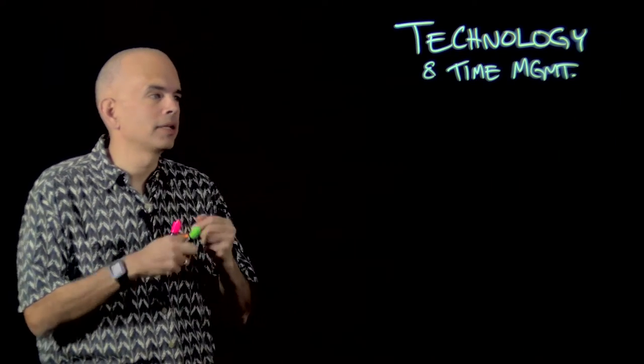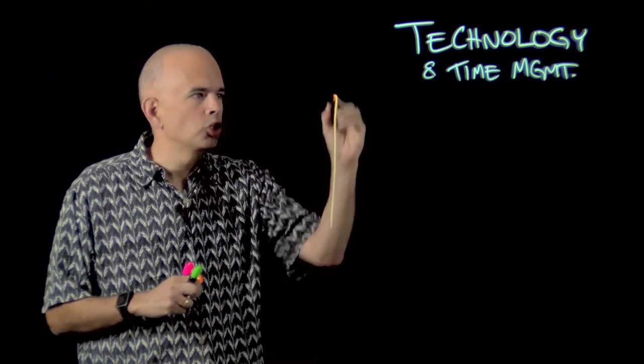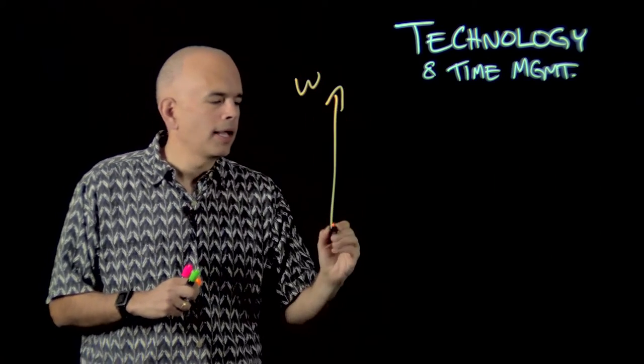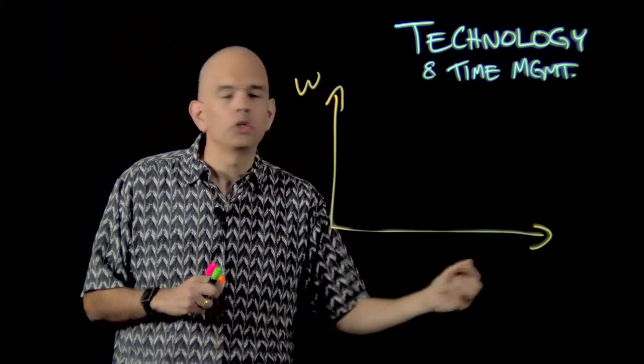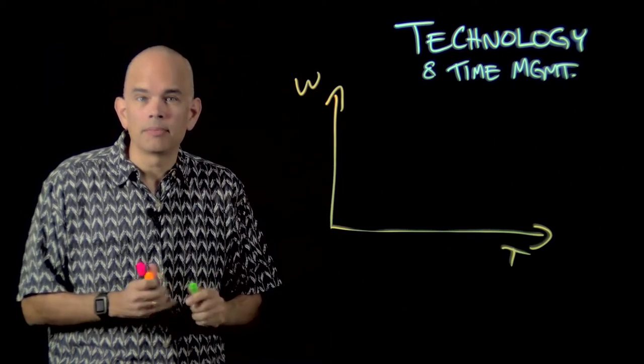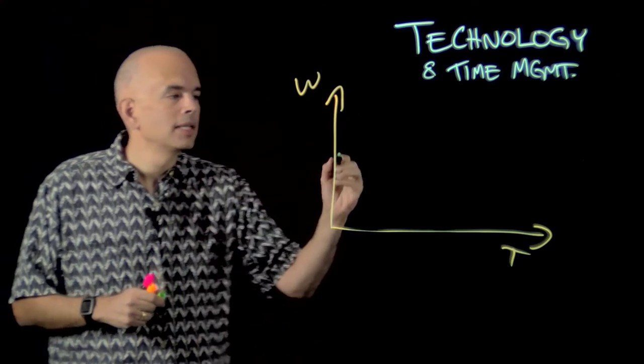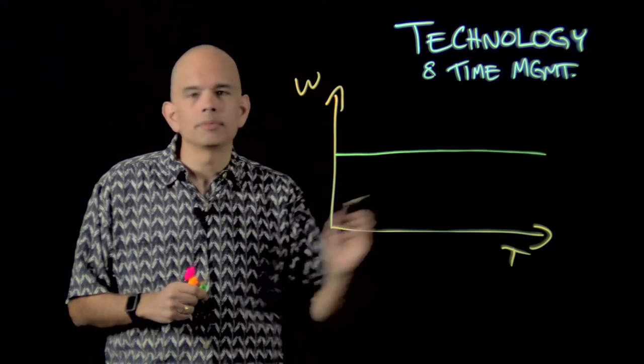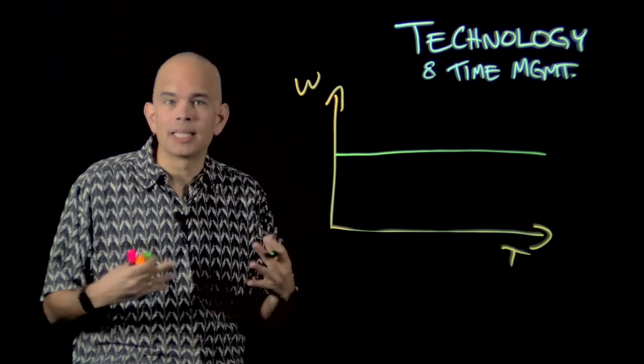For any task you're doing, there's a certain amount of work you have to do in a given amount of time. Given the way you're used to doing things, the amount of work per time is pretty much constant—we've always been doing the same things.